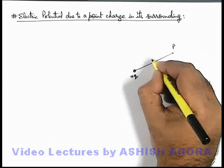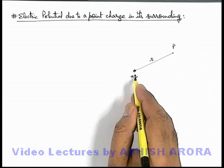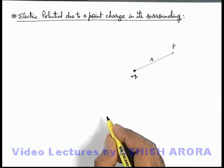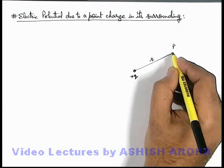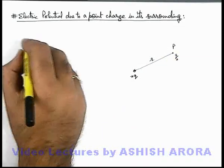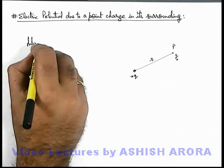If we talk about point P, located at a distance r from the point charge, and we wish to find out the potential at point P, then to calculate potential at P we place a test charge q₀ over here and we find out the interaction energy.